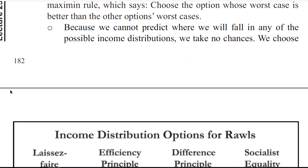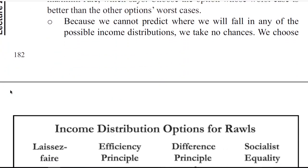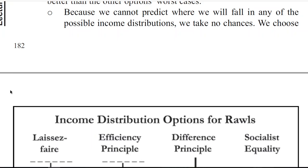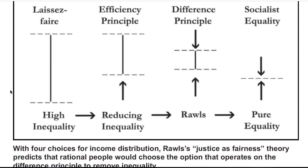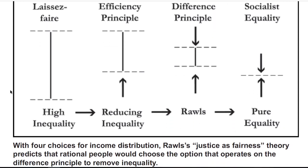Because we cannot predict where we will fall in any of those possible income distributions, we take no chances. Here we have income distribution options for Rawls: laissez-faire high inequality, the efficiency principle reducing inequality, the difference principle, and socialist equality or pure equality. And you can see the gap becoming smaller and smaller between them.